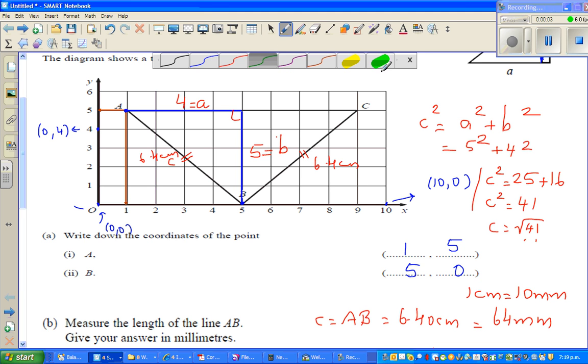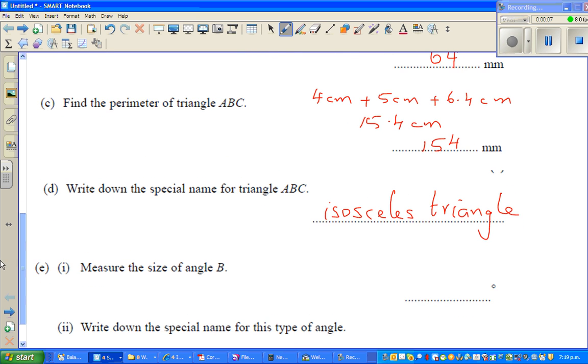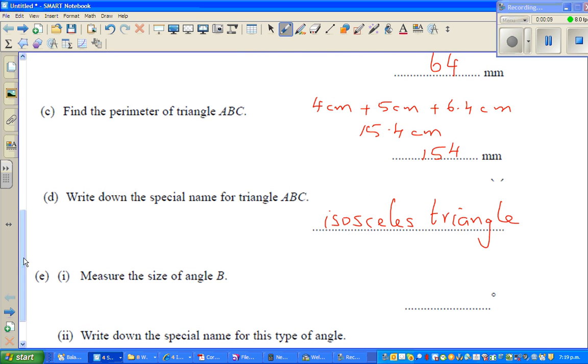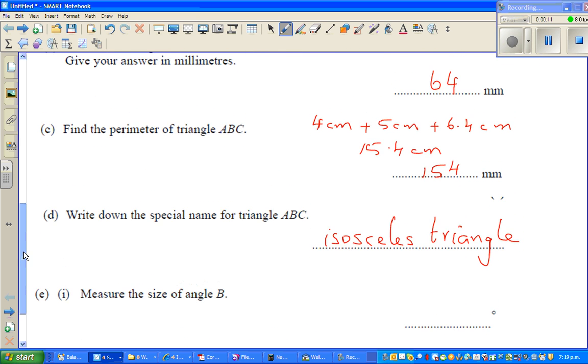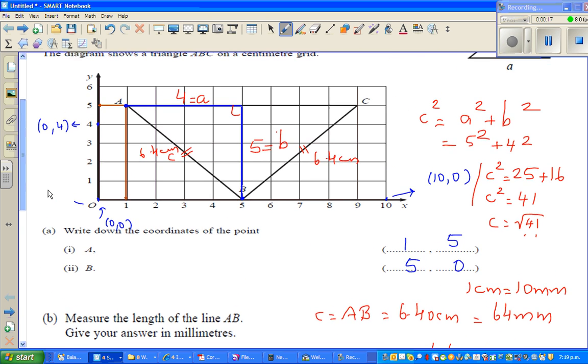Continuing from my last video where we stopped, we found that triangle ABC is an isosceles triangle. Now the question is to find the measure of angle B.